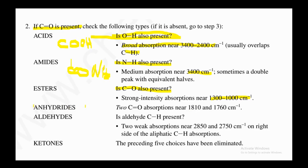Anhydrides are relatively easier to identify because they contain two carbonyl groups — one symmetric and one asymmetric — giving rise to two IR absorption peaks: one at 1810 cm⁻¹ and one at 1760 cm⁻¹. These two carbonyl peaks are quite easy to recognize.